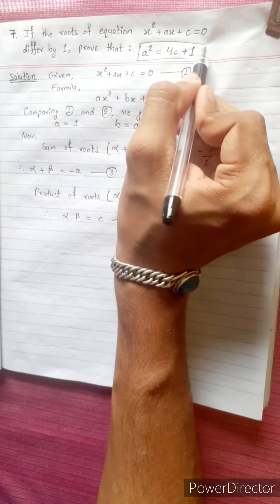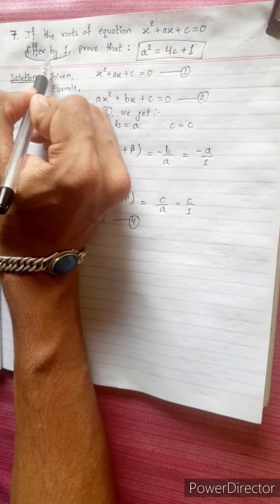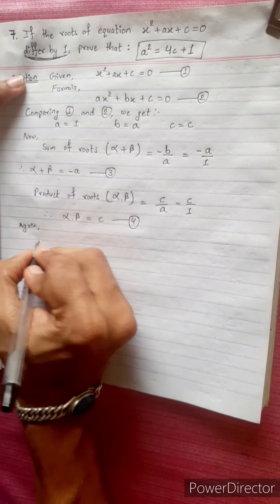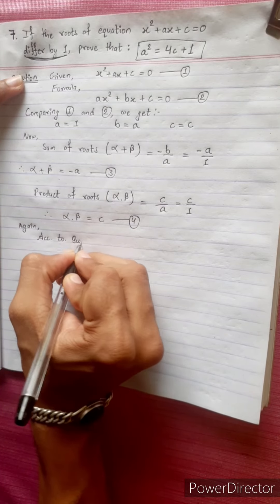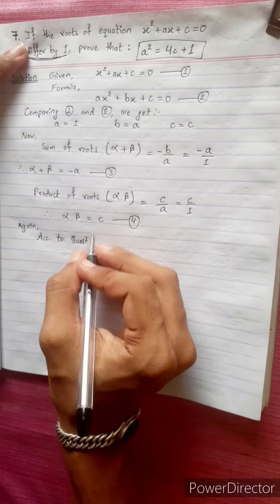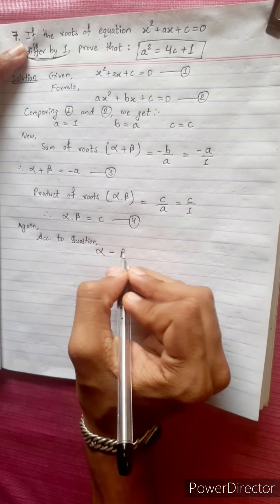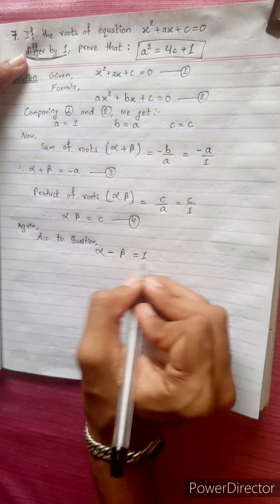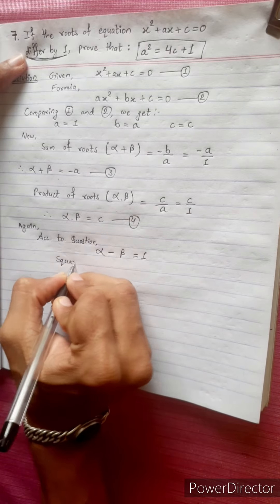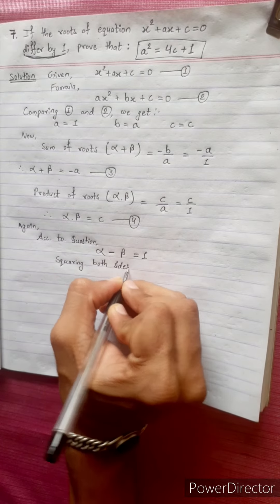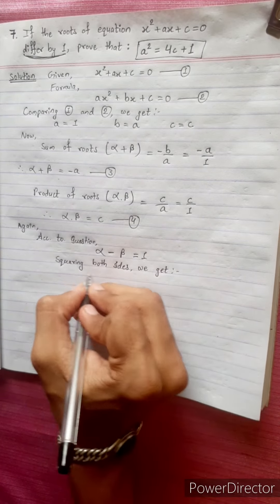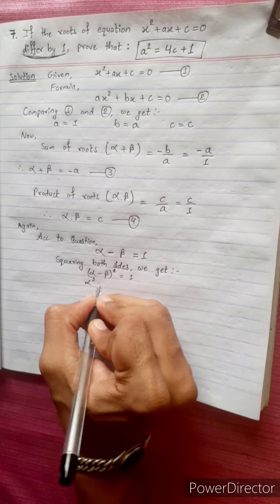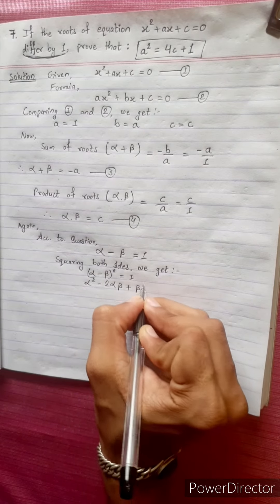Now we will prove the result. According to the question, the roots of the equation differ by 1, so alpha minus beta equals 1. Squaring both sides: (alpha minus beta)² = 1.